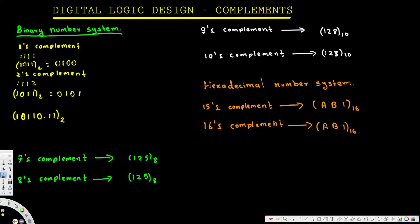Now let's look at a decimal fraction number and convert it into one's complement and two's complement. For one's complement, as we discussed, we can just flip the digits. Flipping is much easier — if it's one we put zero, if it's zero we put one, if it's one we put zero, if it's zero we put one, and if it's one we put zero. That's how we change this number to its one's complement.